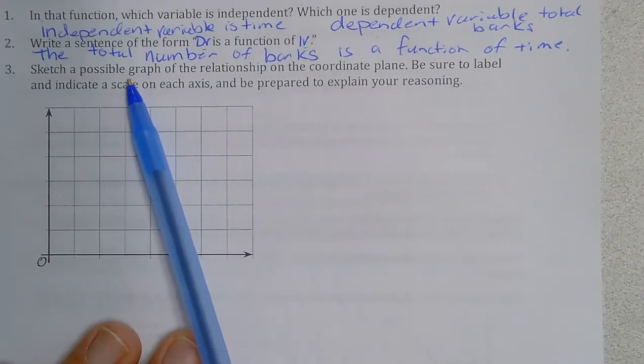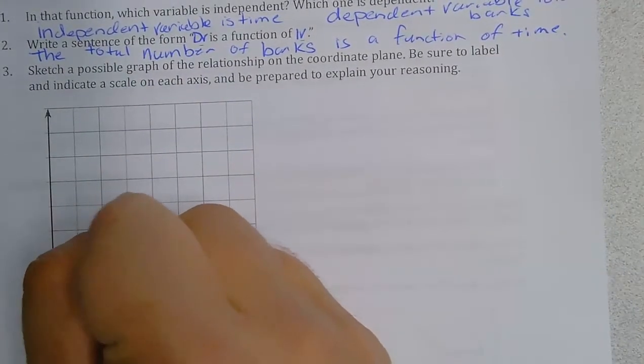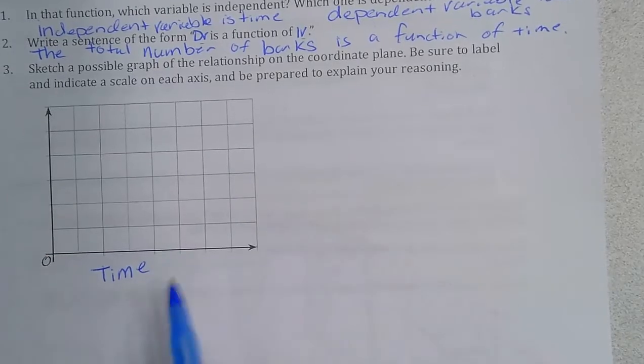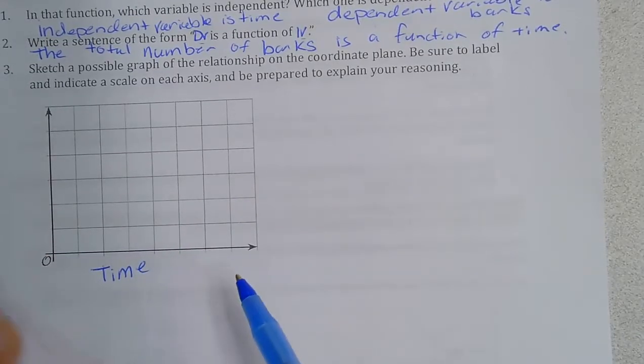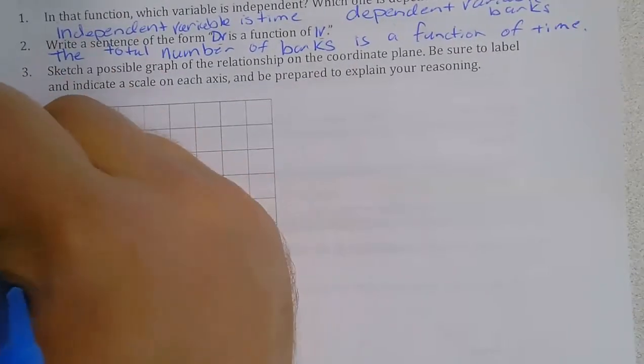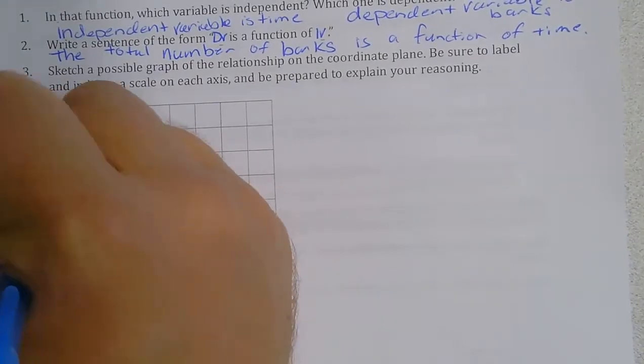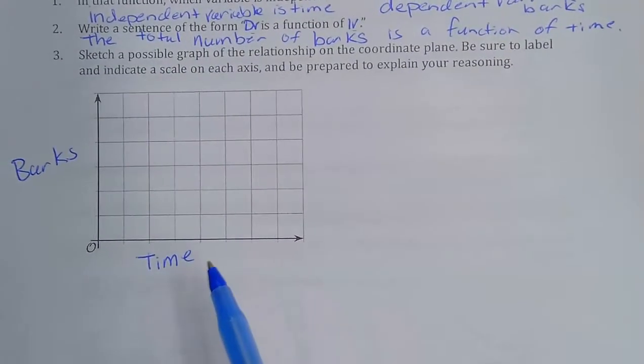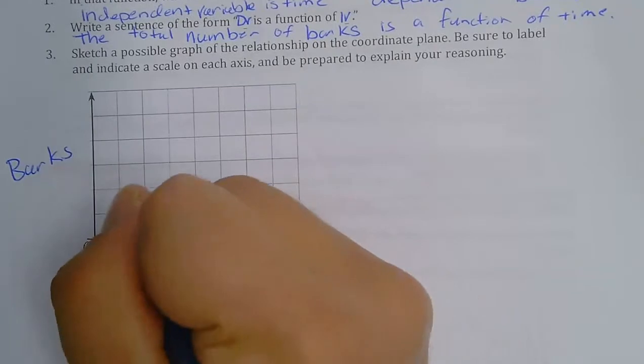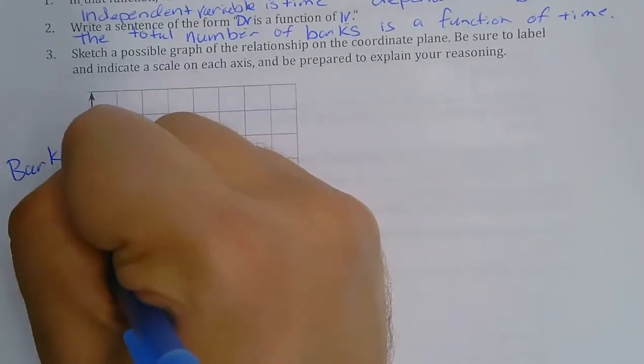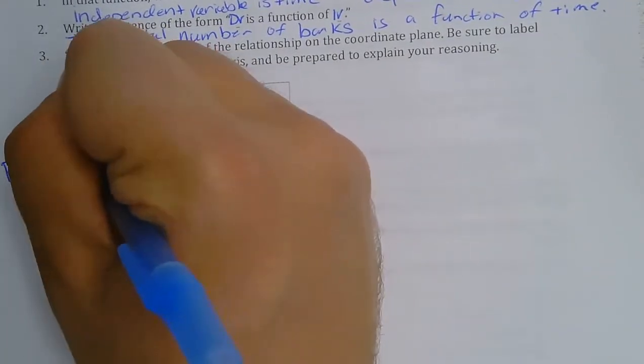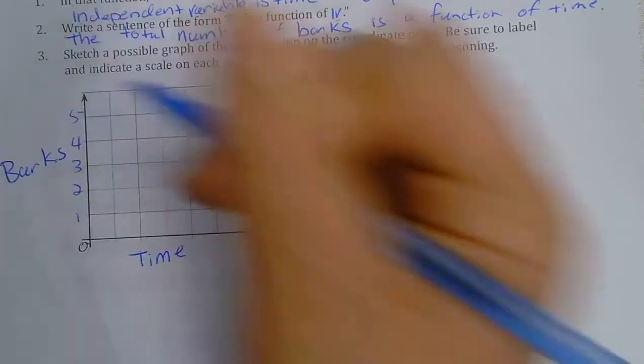So now to graph this, we can put our time on the x-axis since it's the independent variable, and then we would have our barks on the y-axis. And in this case we can put time and then we can put our barks one, two, three, four, and five.